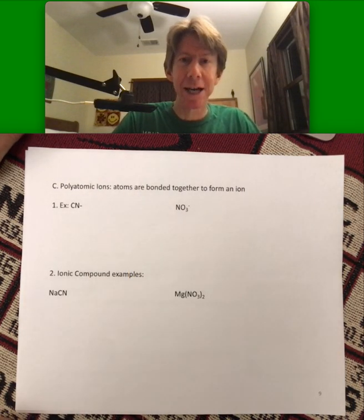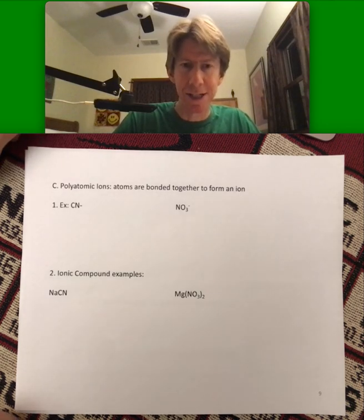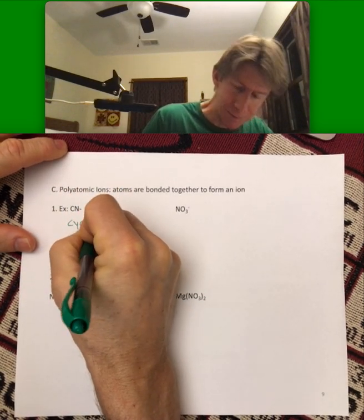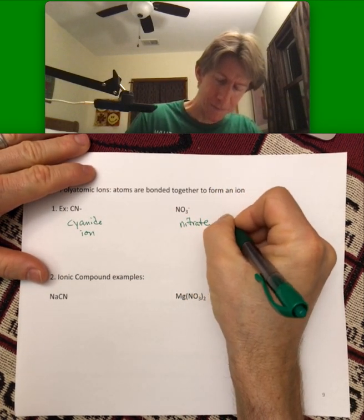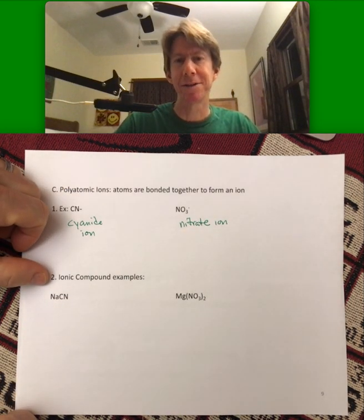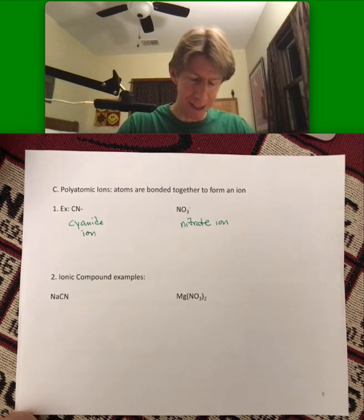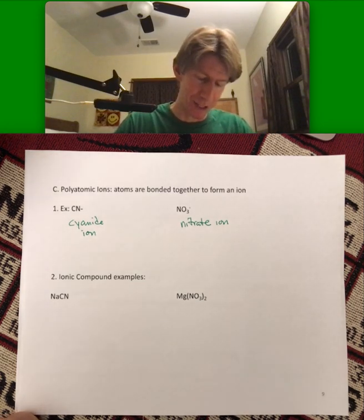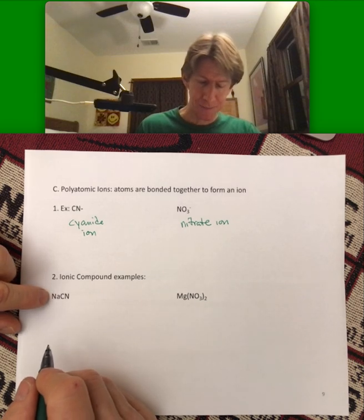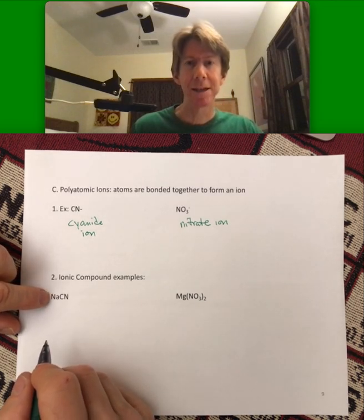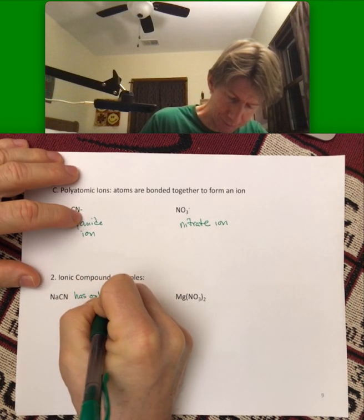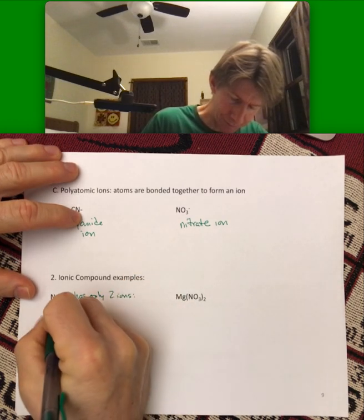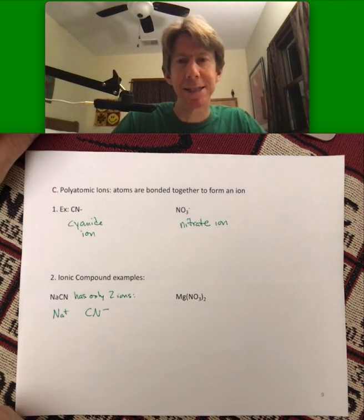Polyatomic ions are bonded together to form an ion. And again, I think you're just going to have to memorize them. So this is going to be the cyanide ion. This is going to be nitrate ion. And in ionic compounds, one of the things that's going to be important we will see, in addition to naming them which we'll tackle in a few minutes, so this sodium cyanide has only two ions in it.